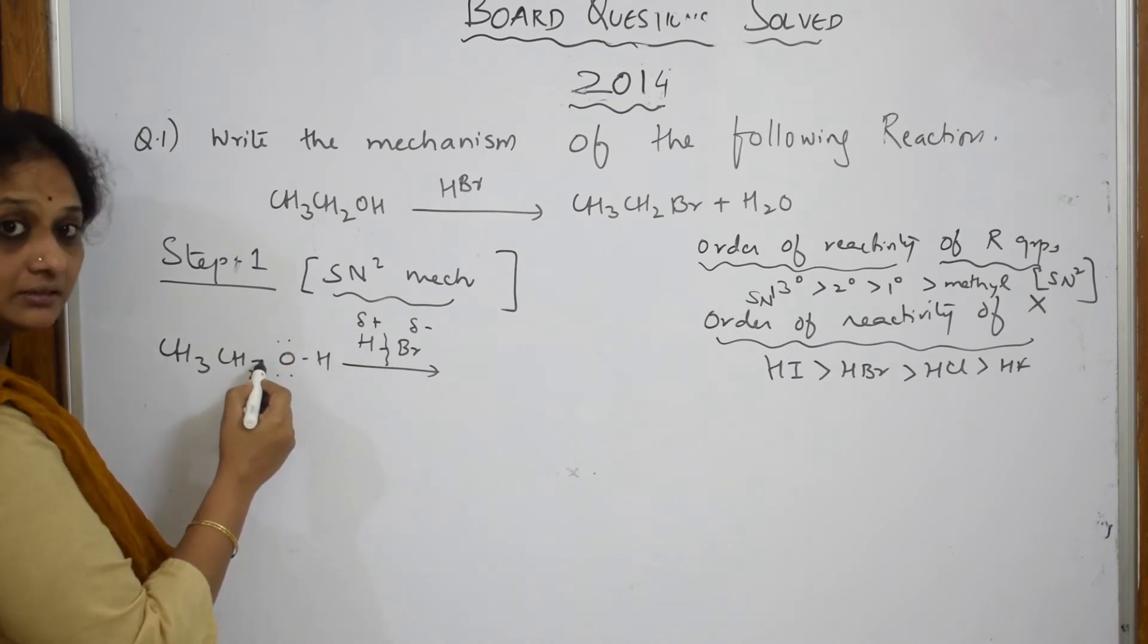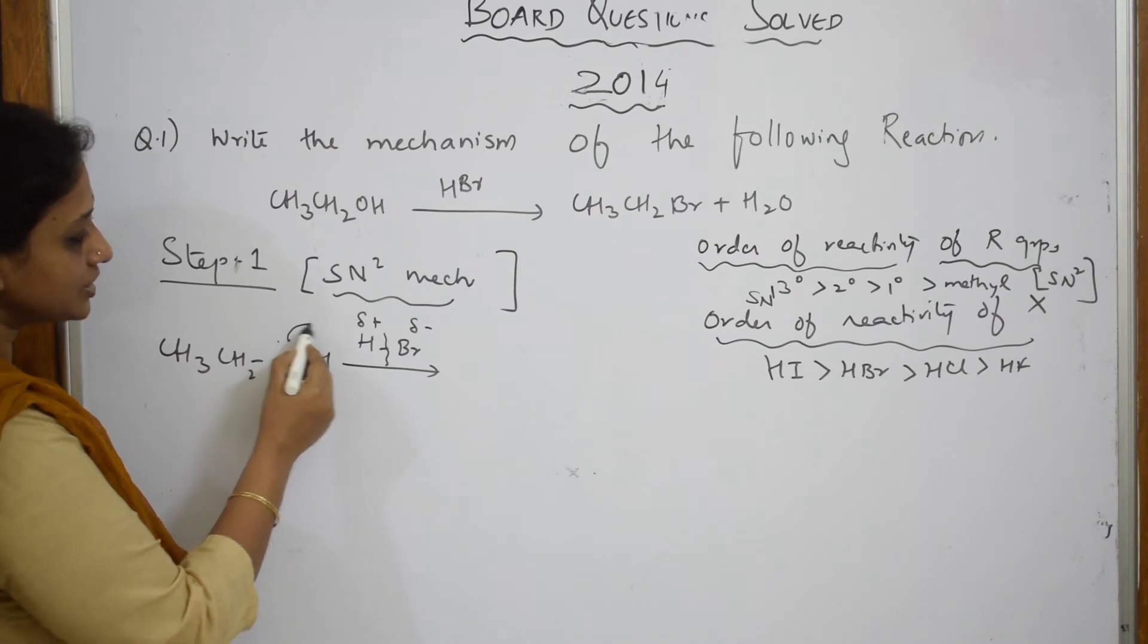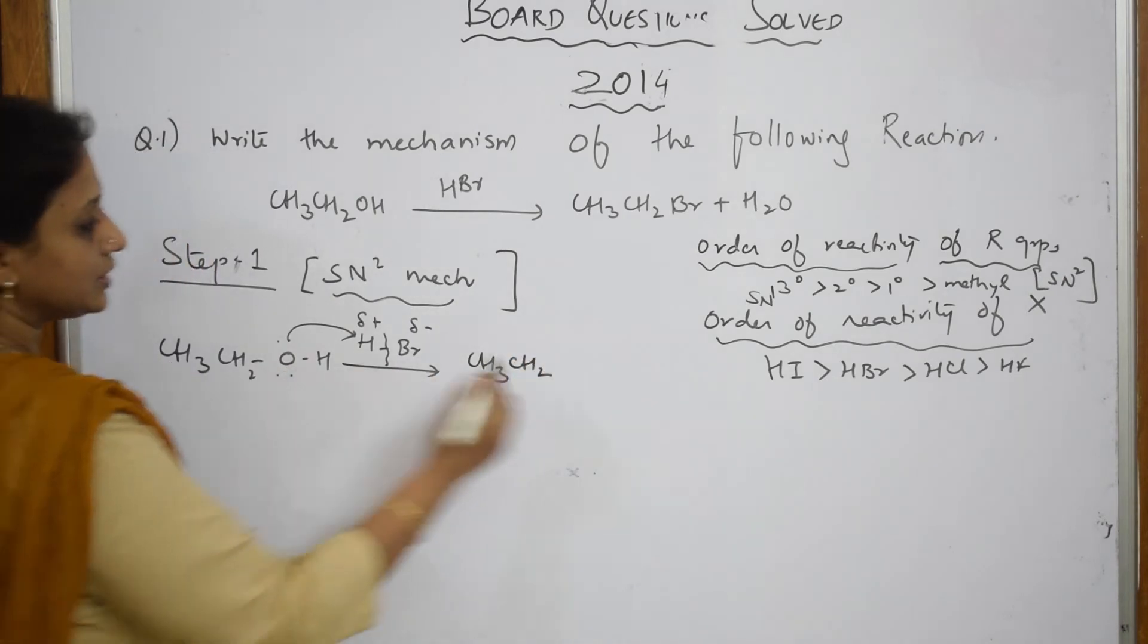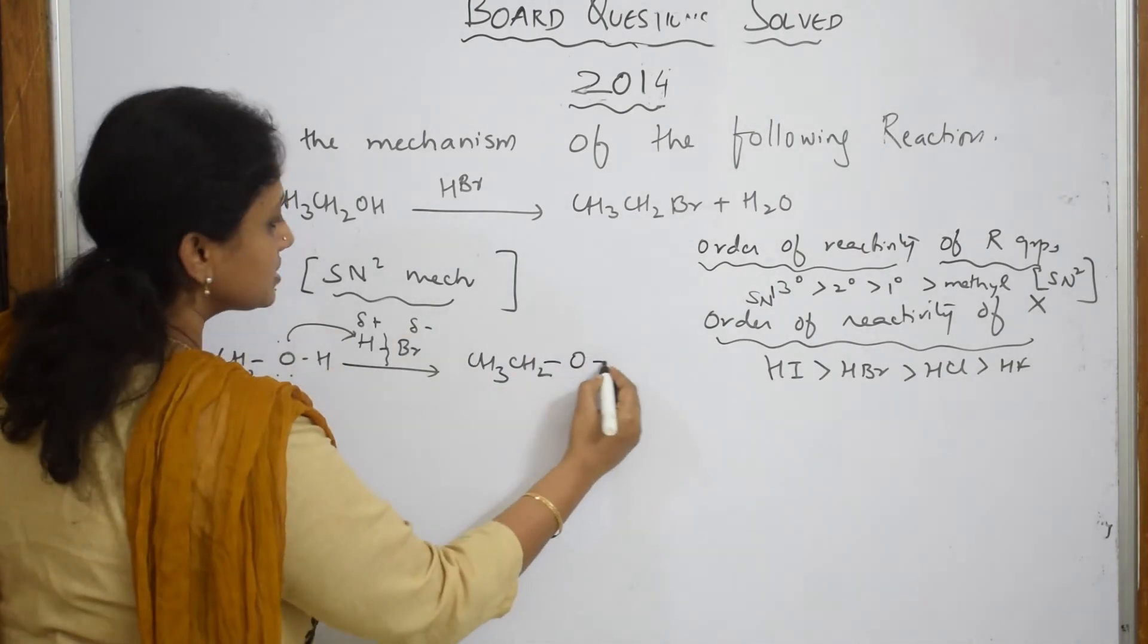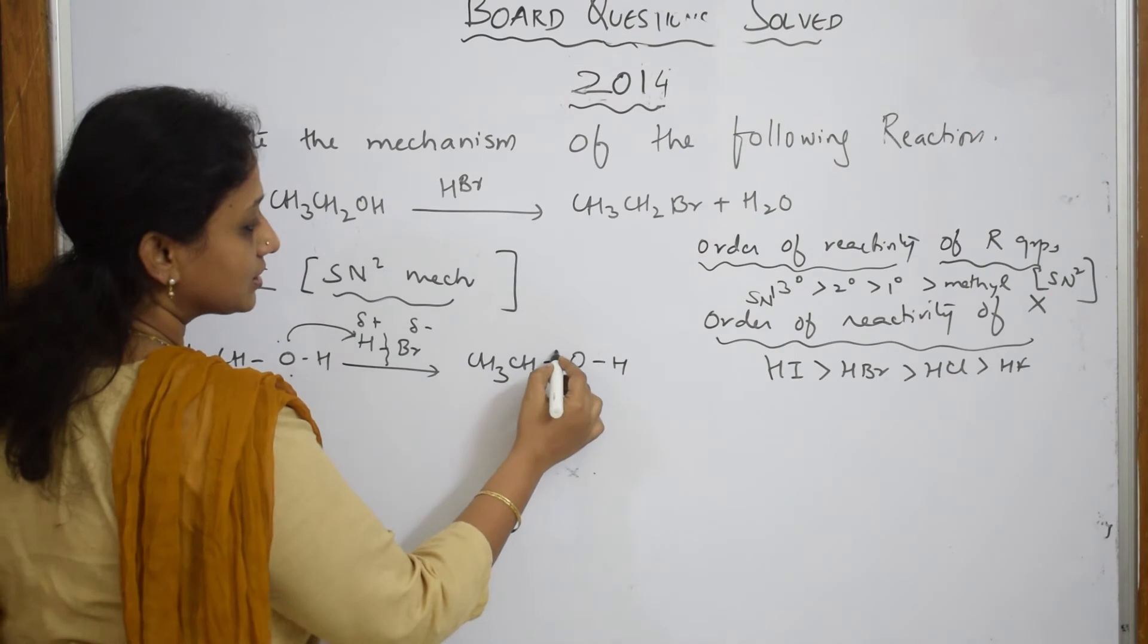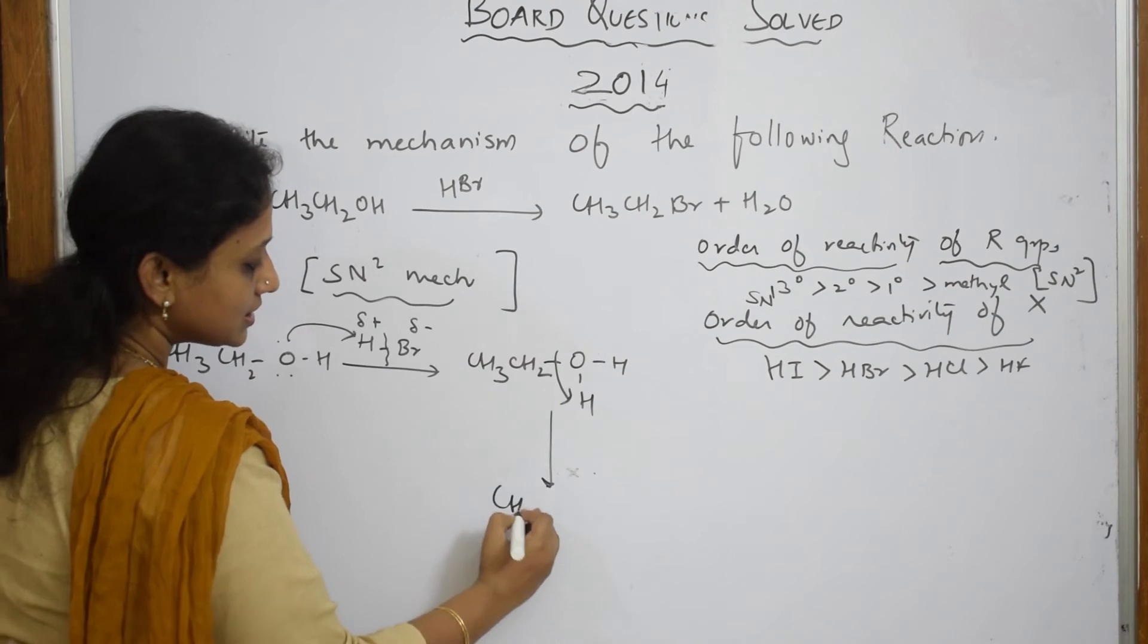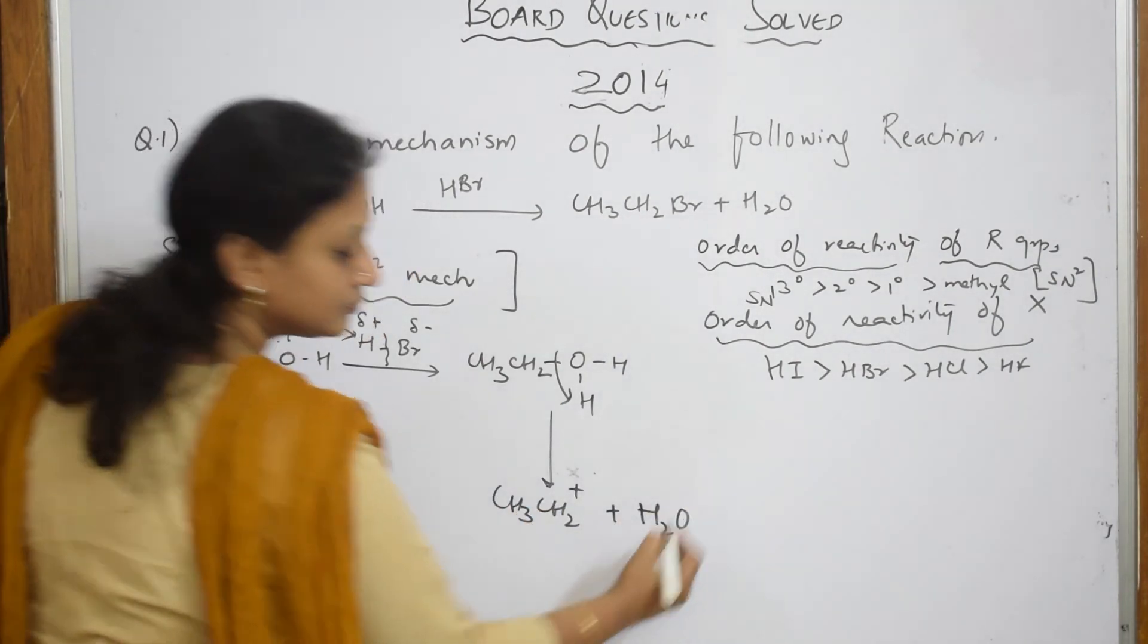This particular bond, this lone pair of electrons is shared with this. What happens now? You get CH3 CH2. This lone pair is shared and this becomes OH2+ and there is a cleavage of the bond here. When there is a cleavage of the bond, this becomes carbocation CH3 CH2+ plus water.